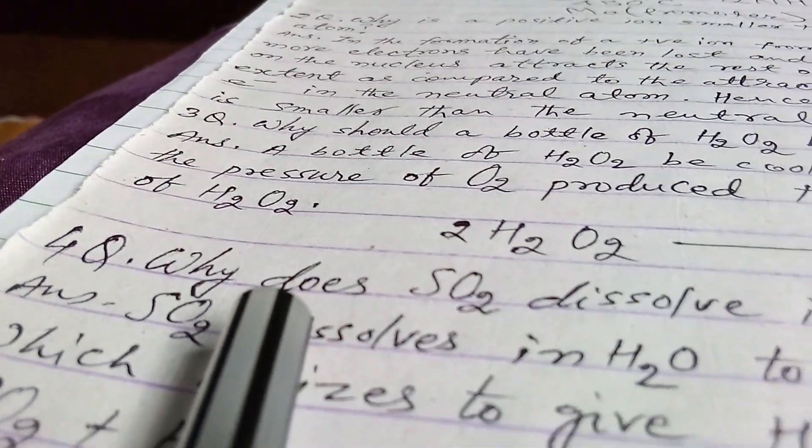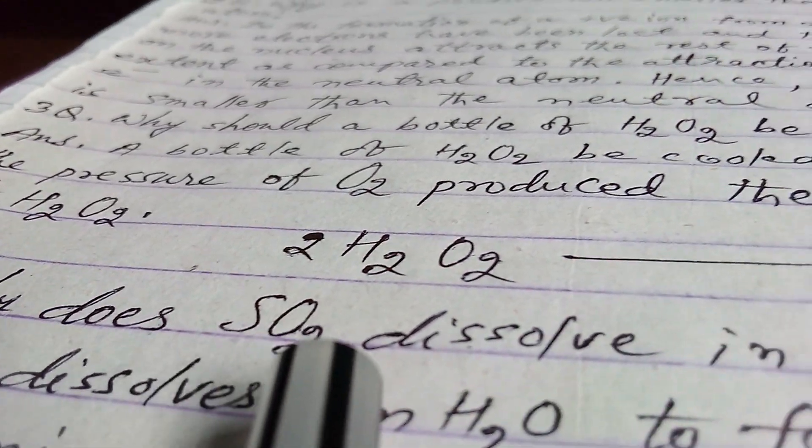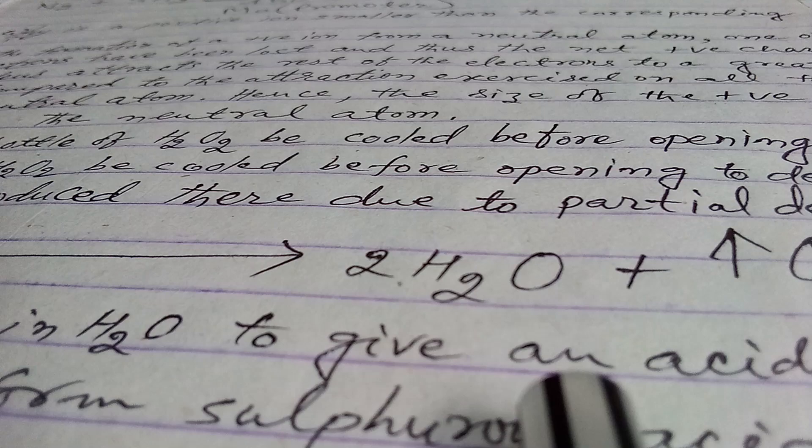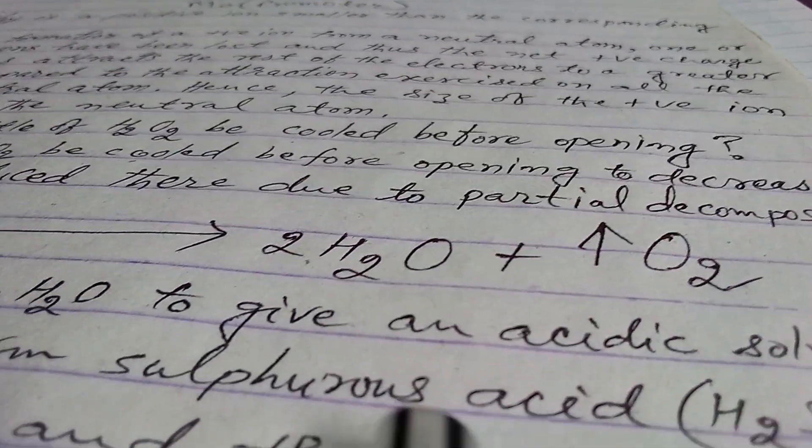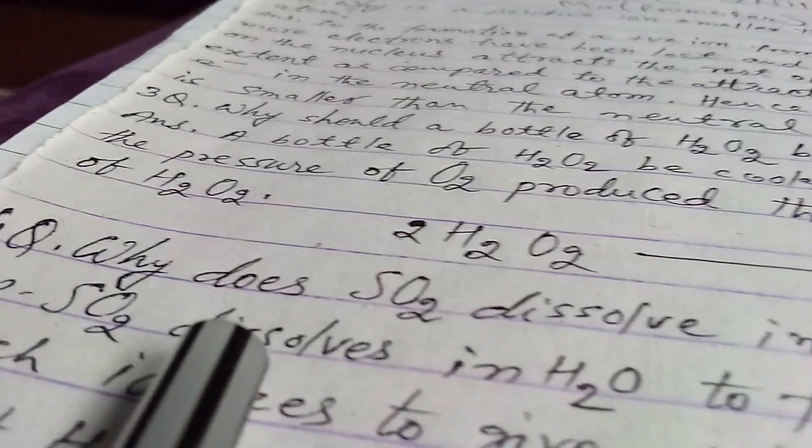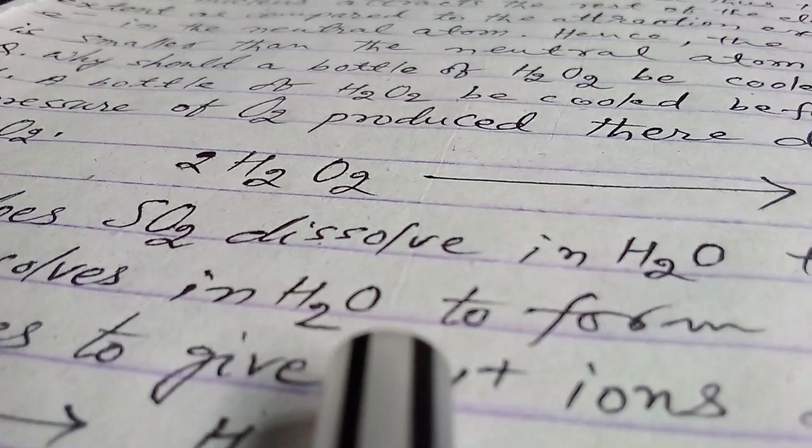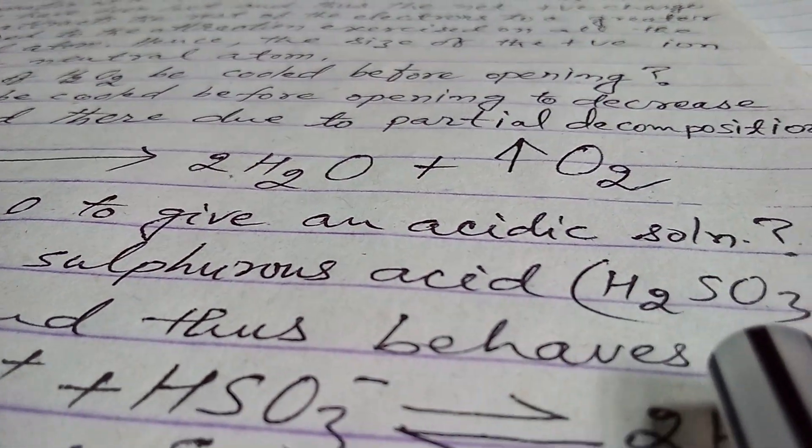Fourth question is: why does sulfur dioxide dissolve in water to give an acidic solution? Answer is: sulfur dioxide dissolves in water to form sulfurous acid, that is H2SO3